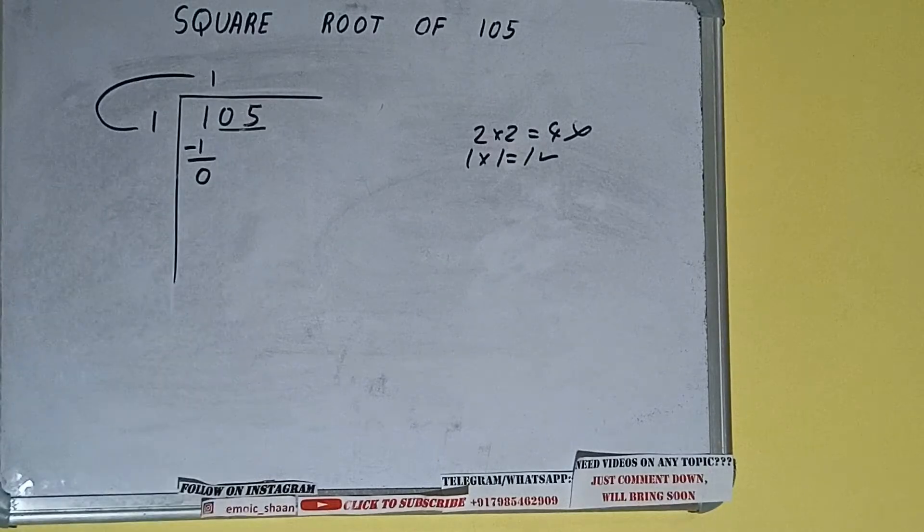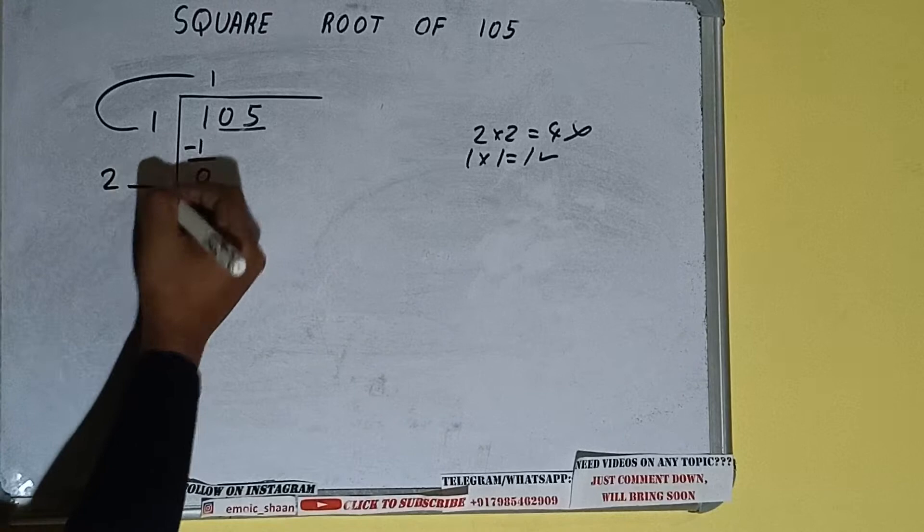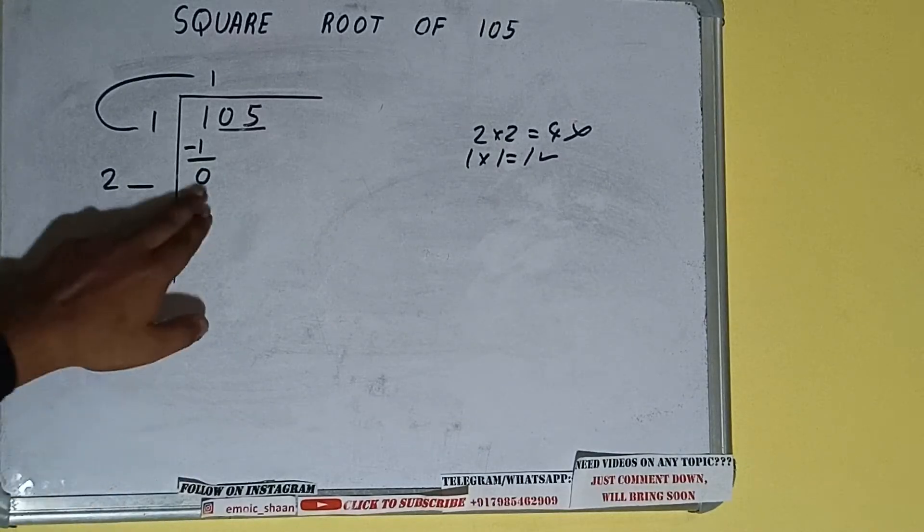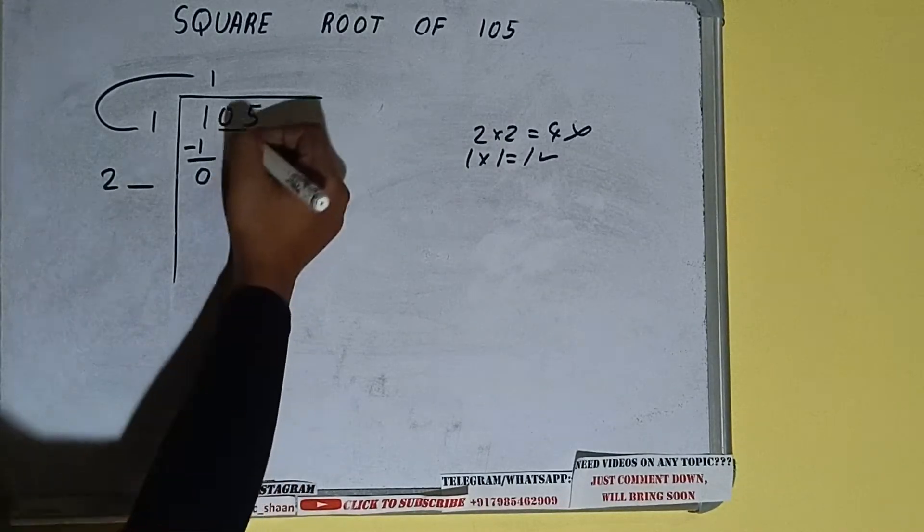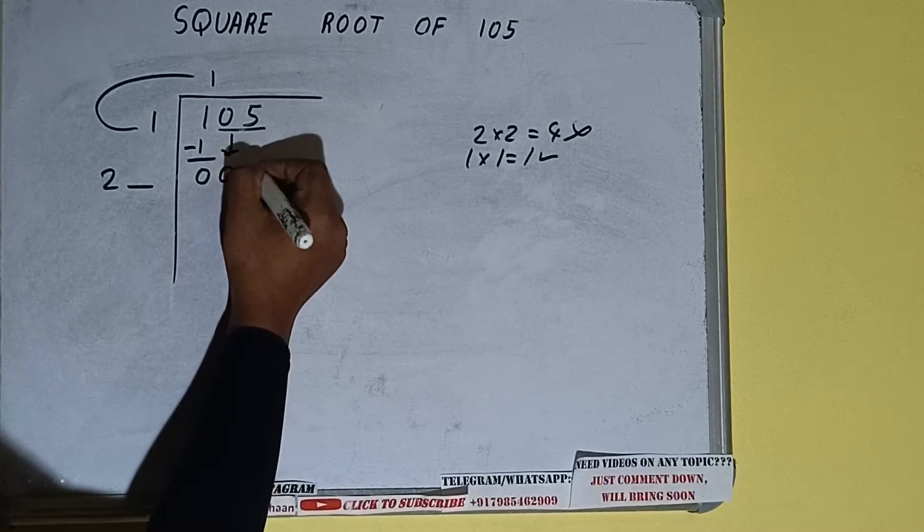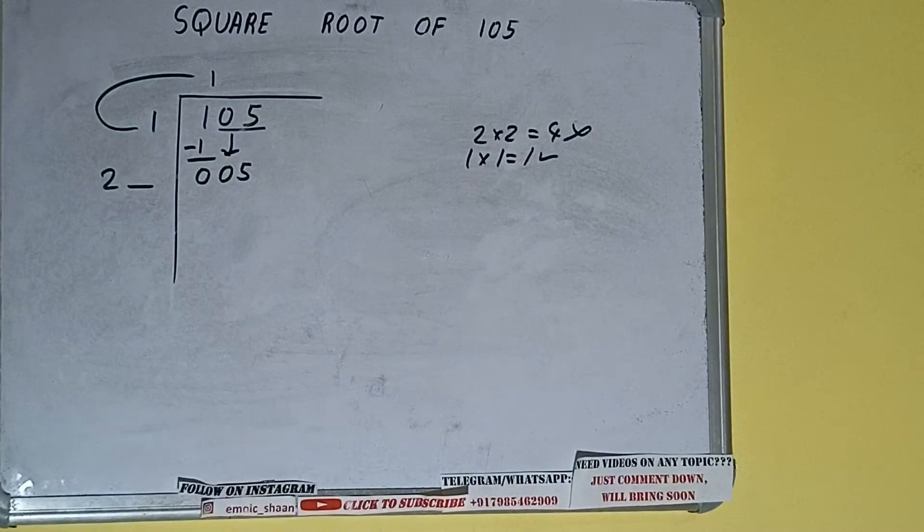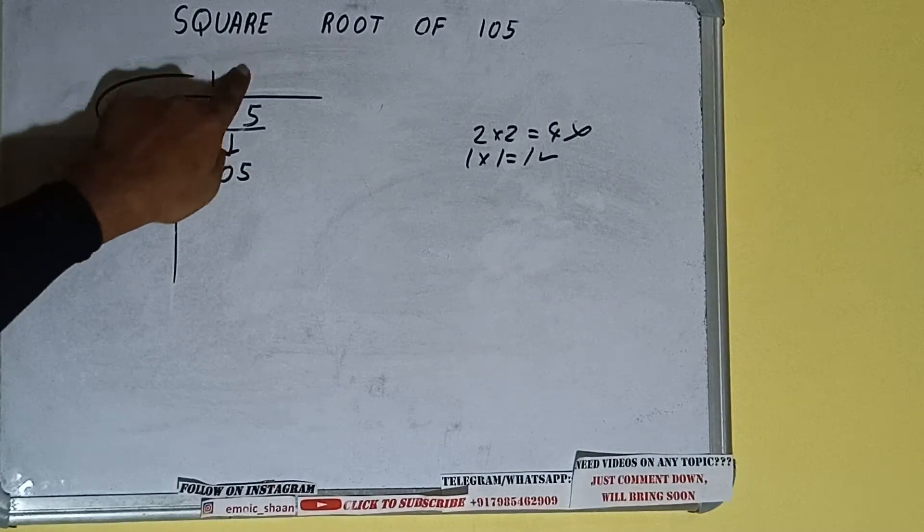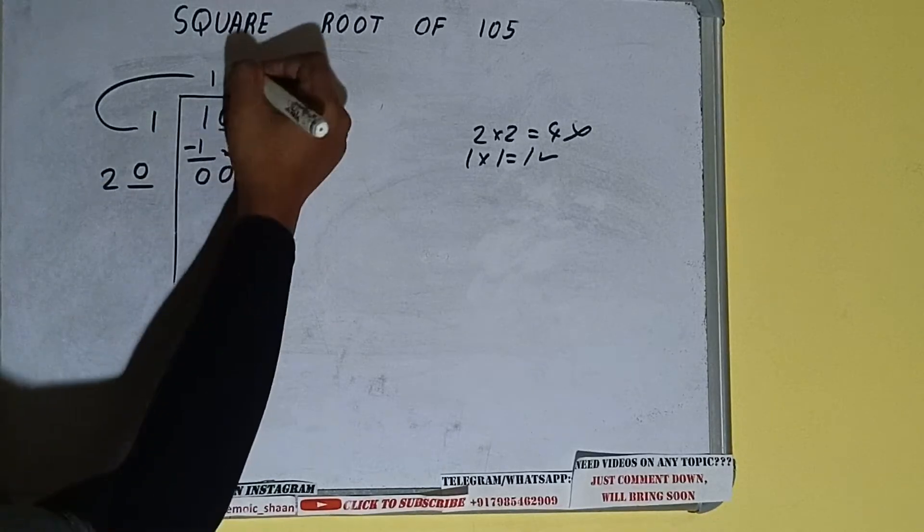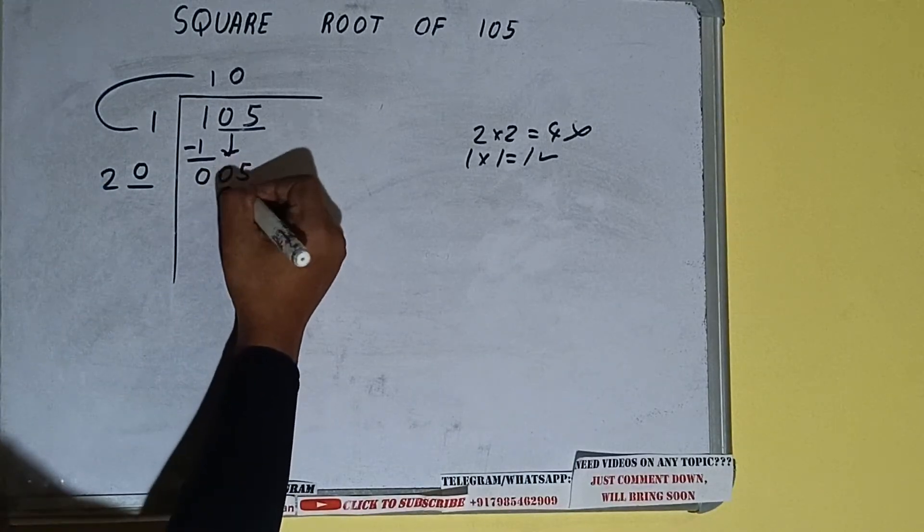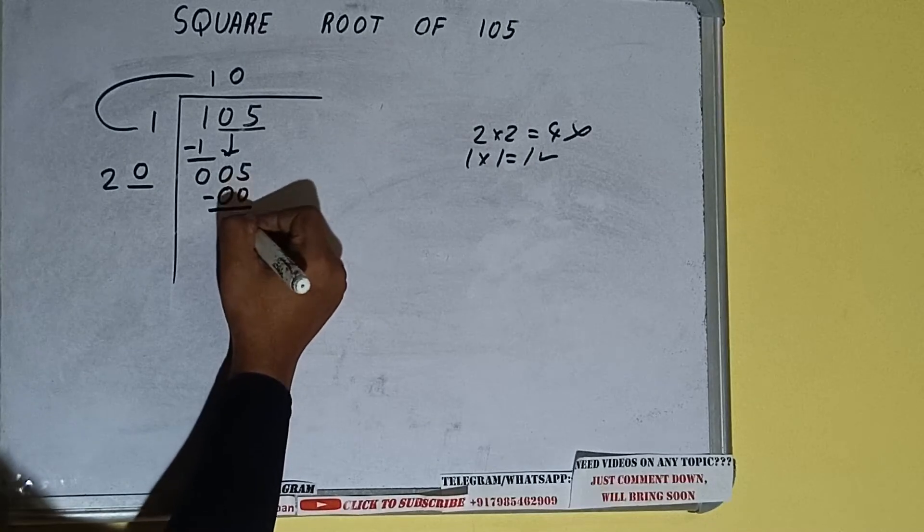We did one into one so add both. So one plus one will be two, write it here and keep a digit extra and this number we need to make it big. So bring the next pair down and it will be five. Now whatever number we write here we have to write here also. So if we write zero here and zero here, subtract five will be left.